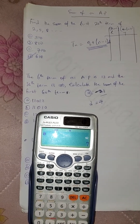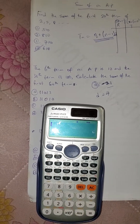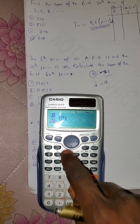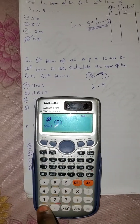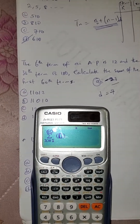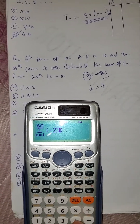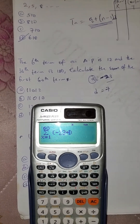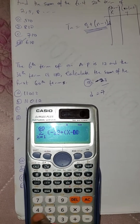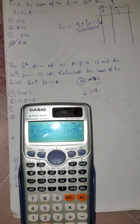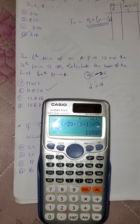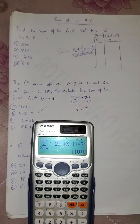I can still use the calculator to find the common difference. Press shift stat, press your reg, go to 2 — the common difference is 7. So I use the calculator to find the first term, which is minus 23, and the common difference, which is 7. Then press AC and reset your calculator. Using the sigma formula: shift stat, sum from the first term — that's 1 — to the 60th term. Inside the bracket: the first term is minus 23, plus into bracket of X minus 1, close bracket, multiplied by the common difference, which is 7. Press equals. The answer is 11,010.